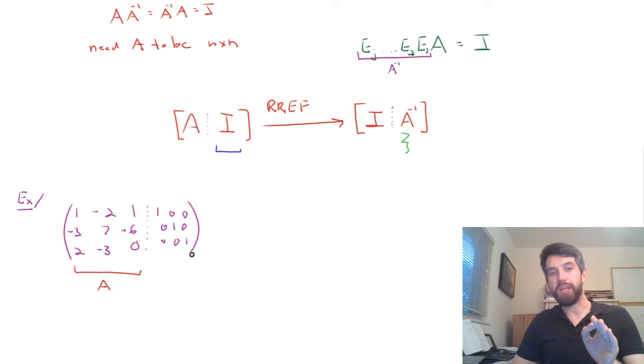And then, what I want to do here is, I want to do elementary row operations to the A matrix, and turn it into the identity. And then, the identity matrix that I have here, that's going to transform as well under these row operations. And then, whatever it transforms into will be my inverse.